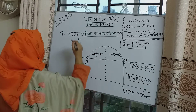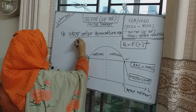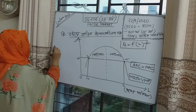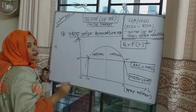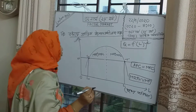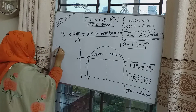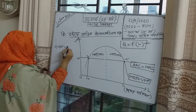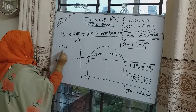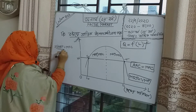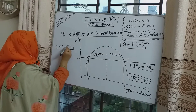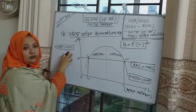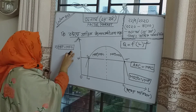I will write WVMP. MRP is equal to MFC. This is the condition. Marginal Revenue Product is equal to Marginal Factor Cost.